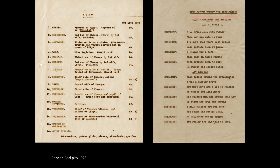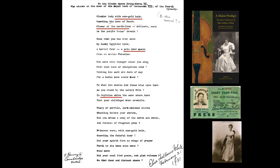The story doesn't end there. We get other people involved in promulgating this sort of Libyan, Western, light-haired, Nordic origins narrative. A well-known author, composer, and violinist from Maine named Elise Fellows-White writes a poem to the 'blonde queen' Hedda Paris II, with phrases including 'with sun-gold hair,' 'flower of the Northland,' 'a pale snow queen,' 'Scythian skies,' and 'North Sea waves.' You start to get the idea.